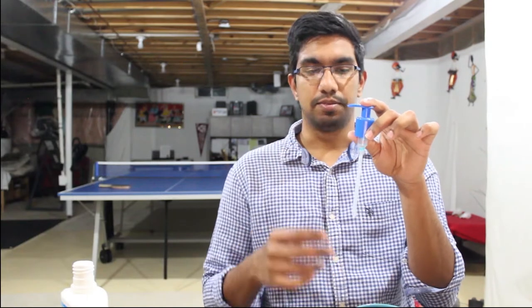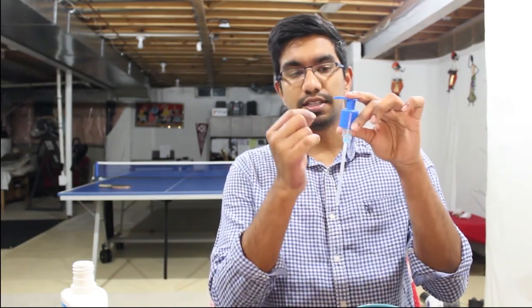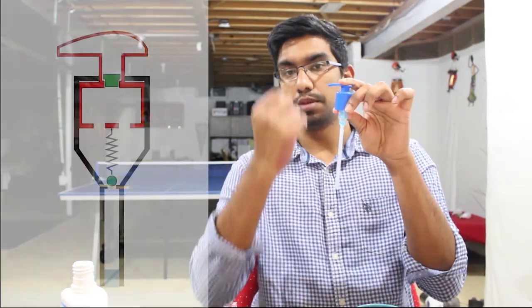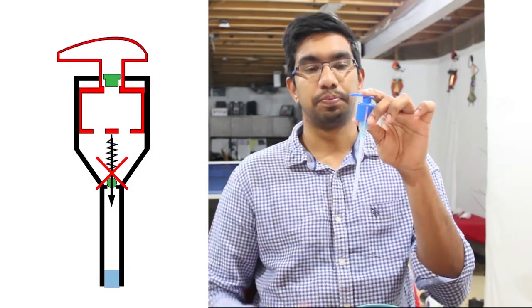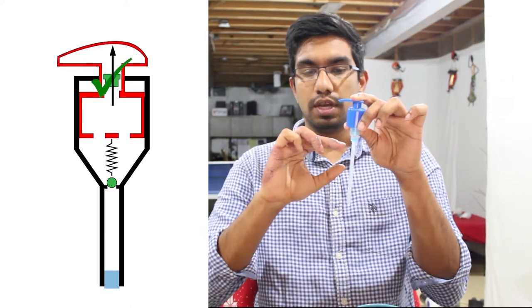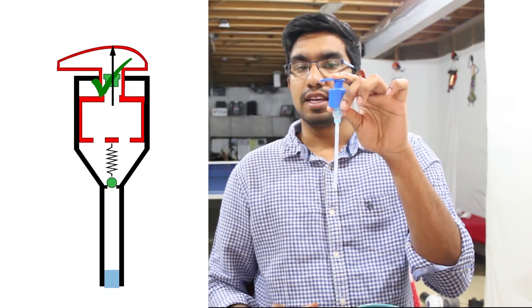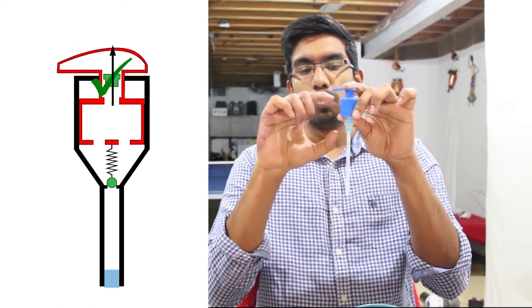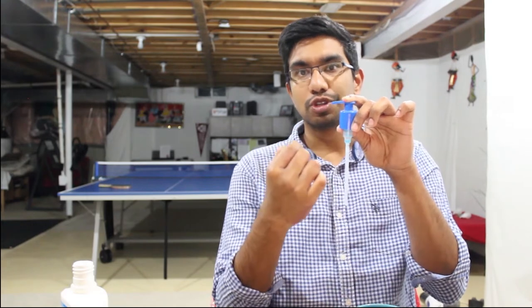The second thing that happens is there's a piston that's attached to the cap. And when I push the cap down, the piston moves down and opens a valve at the top of the system. So now that basically means that there is a pathway between the top portion of the system and the atmosphere. And as I keep compressing the cap, whatever fluid that I have here is now forced to come out through the cap.